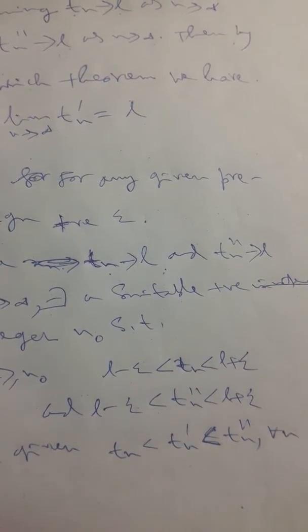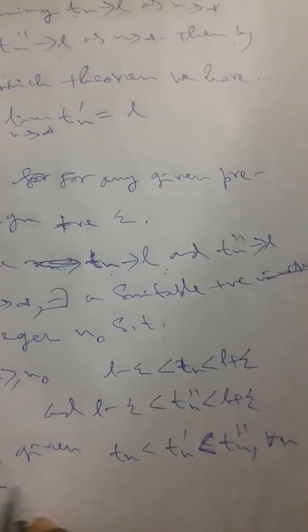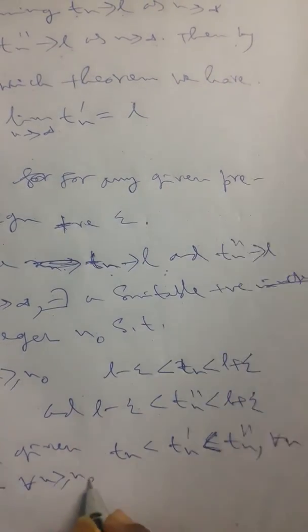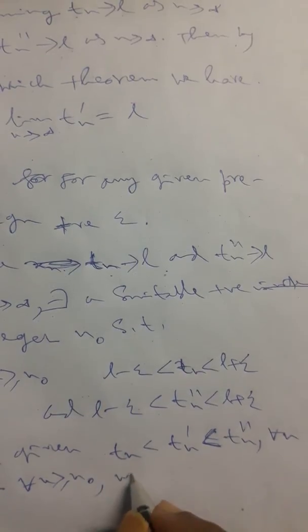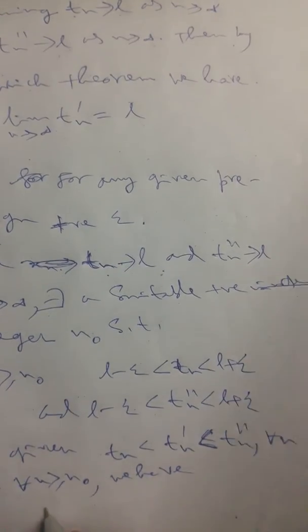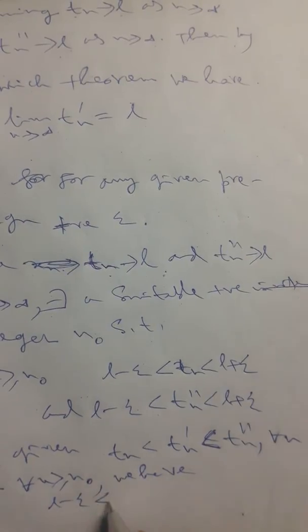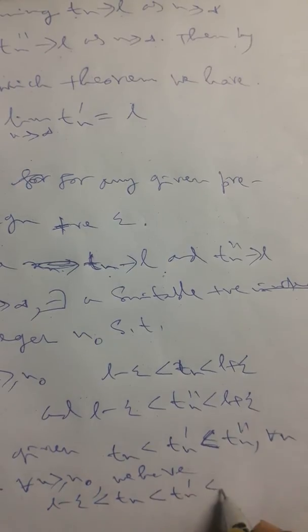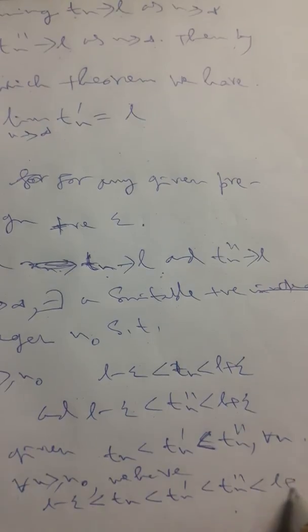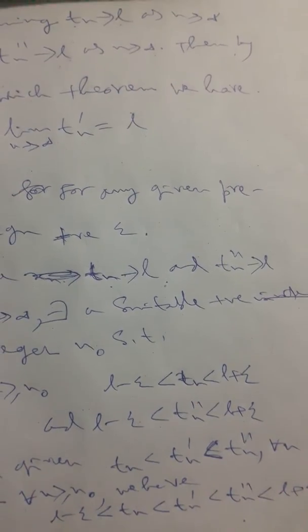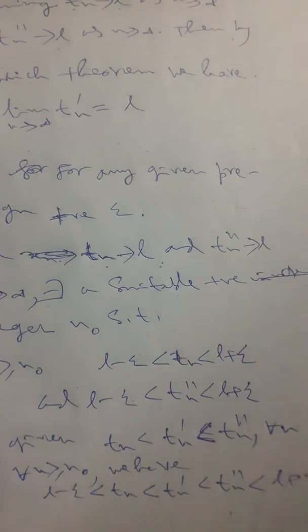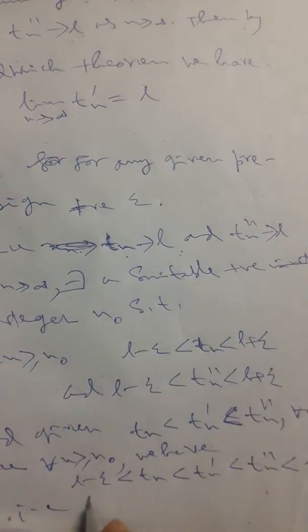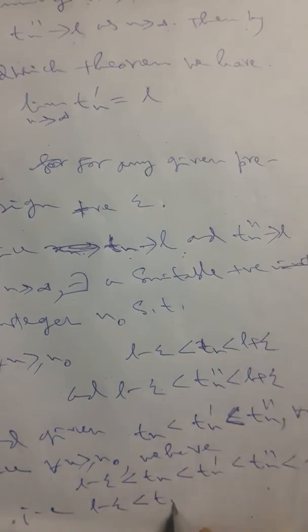And hence, for all n ≥ N₀, we have l − ε < tₙ ≤ t′ₙ ≤ t″ₙ < l + ε, that is, l − ε < t′ₙ < l + ε.